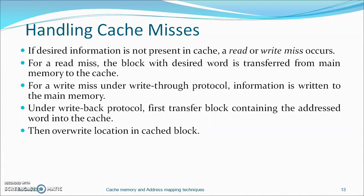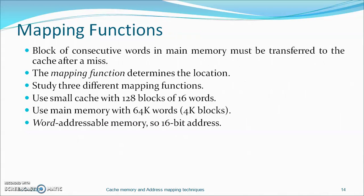If the desired information is not present in the cache, a read or write miss occurs. For a read miss, a block containing the desired word is transferred from main memory to the cache. For a write miss under write-through protocol, the information is written directly into main memory. Under a write-back protocol, first the block containing the addressed word is transferred into the cache, then the location in the cache block is overwritten.